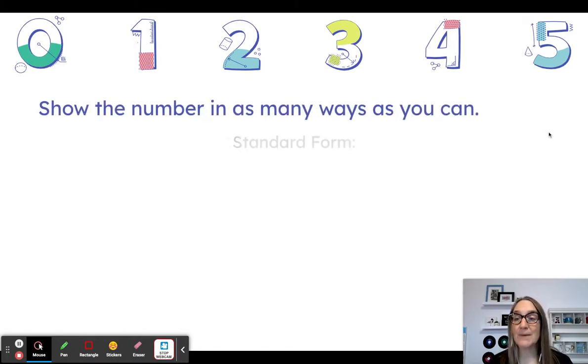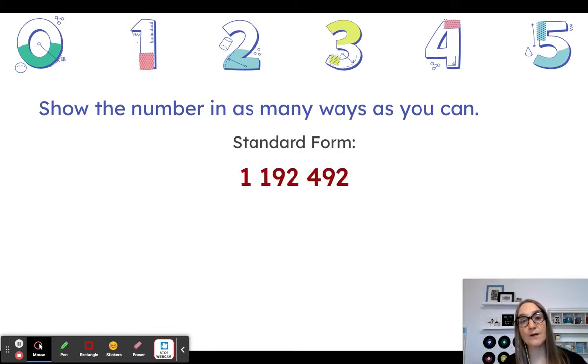We're going to show that number in as many ways as we can. Let's start with standard form. It's standard. It's the way we always write numbers. So we're going to start there. This is how we write it. 1,192,492.